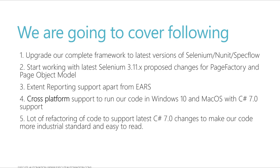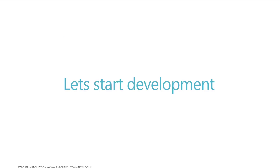Finally, we're going to do a lot of refactoring of our code to support the latest C# 7.0 changes, making it more industrial-standard and easy to read. Apart from just talking about C# framework development, most of the time we'll be talking about how to refactor our code and make it industry-standard — that's what this framework course emphasizes, and exactly what we're going to do in Season 2 as well. So let's quickly start developing everything we've discussed. For that, I'm going to flip to Visual Studio.